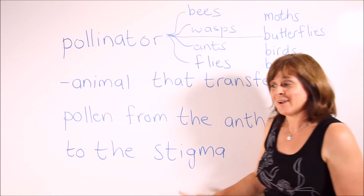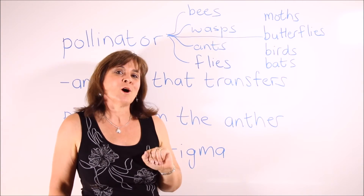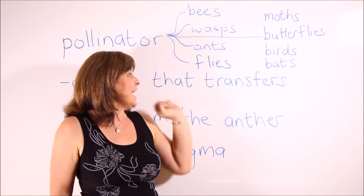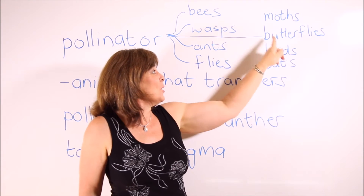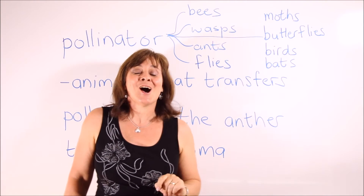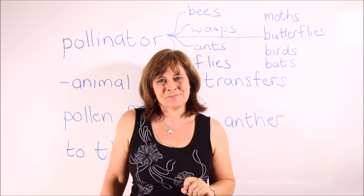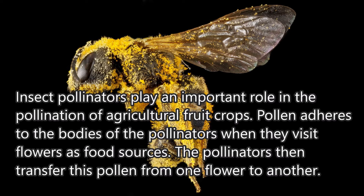A pollinator is an animal that transfers pollen from the anther to the stigma. Here are some examples: bees, wasps, ants, flies, moths, butterflies, birds, and bats are all pollinators.